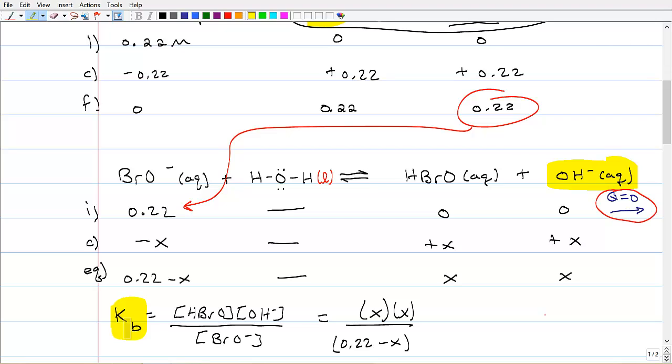And we also know it's going to be equal to the products divided by the reactants, which we've shown. And then we put in our equilibrium row. We put that right into our equilibrium expression. And that's what this thing is right here that I've just boxed.